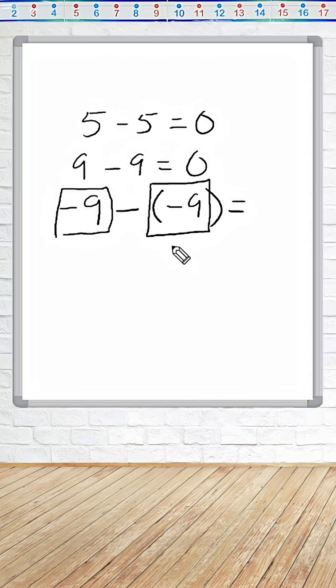Now, we should remember that anything take away itself is equal to 0. And if this first term is negative 9, to make 0, we have to combine it with its additive inverse, the opposite of negative 9, which is positive 9. So everything after this negative 9 must be equal to positive 9.